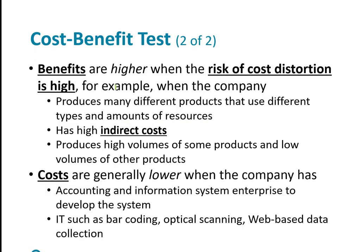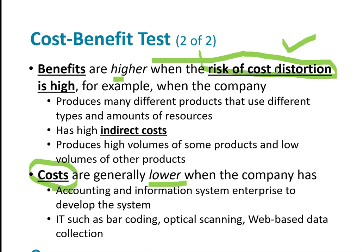The benefits are also higher when the risk of cost distortion is high — as we saw when looking at the Eclipse and treadmills examples. The costs are lower when the company already has an accounting and information system to develop the system — for example, when IT has barcoding or optical scanning in place that is already recording all costs.